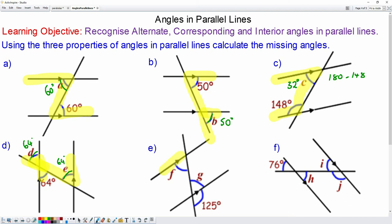For question f, you can see that f and g are alternate, which means they're equal. And g and 125 lie along a straight line, so they will add up to 180. So g will be 180 minus 125, which is 55 degrees. So f will also be 55 degrees.